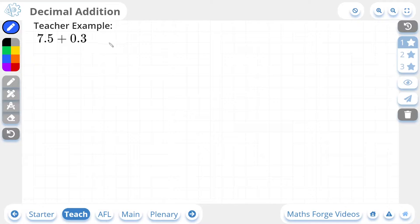So let's take a look at the first one-star example. We're being asked to add 7.5 to 0.3. How I write this out is in the column method. I'll write 7.5 and 0.3.